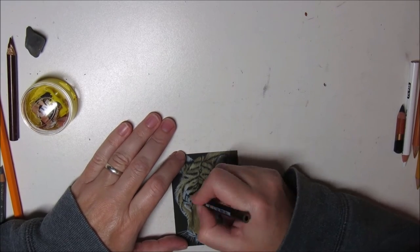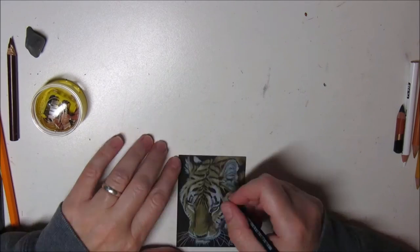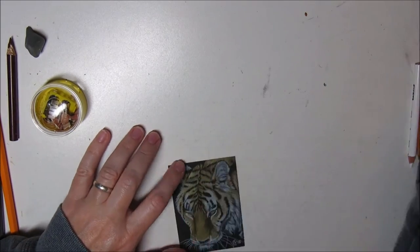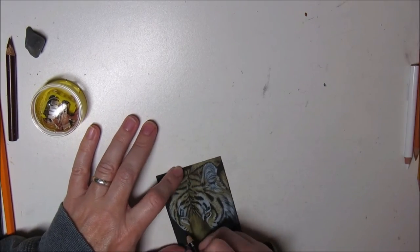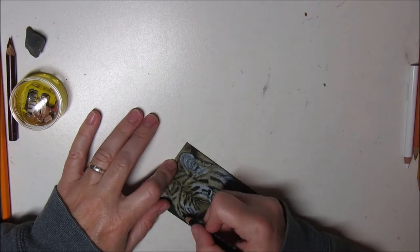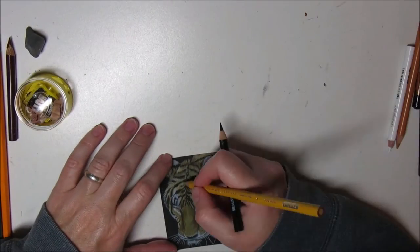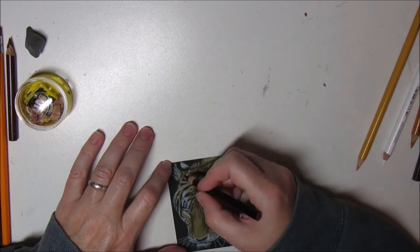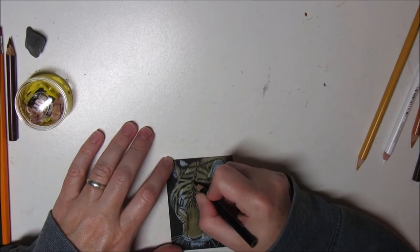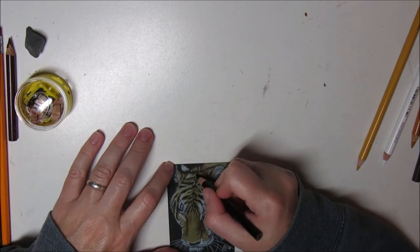Once the fur is pretty much established, I always use a black pencil to color in the black spots. Even though you could just leave it alone with the black paper, I like to make it more uniform by adding black pencil, also keeping it very sharp.